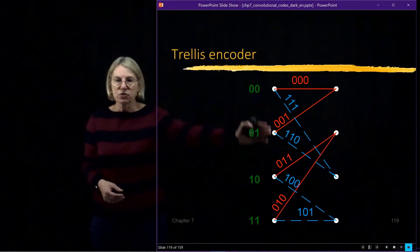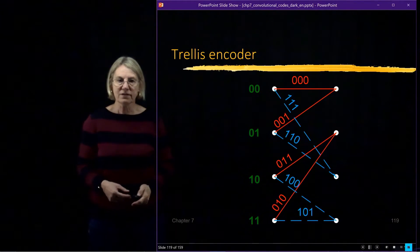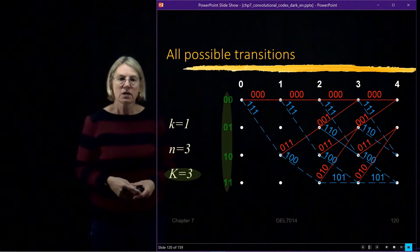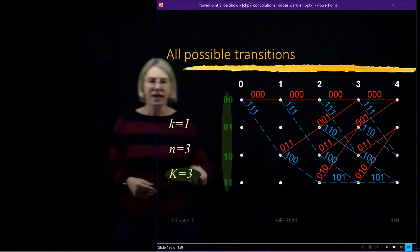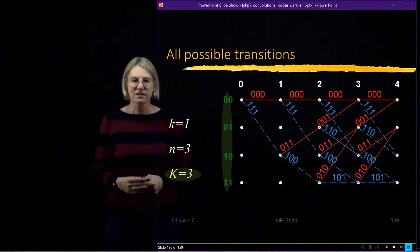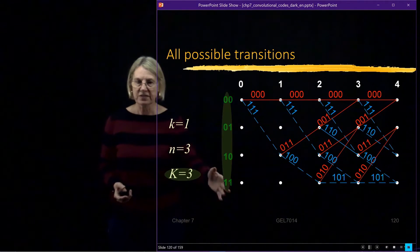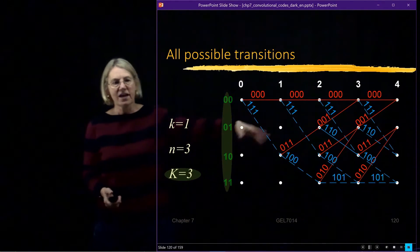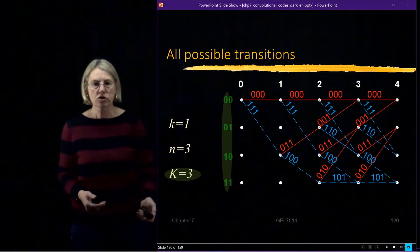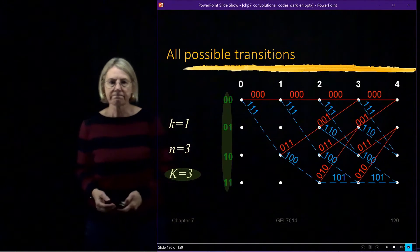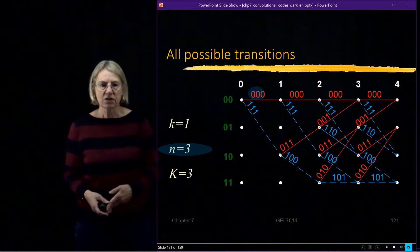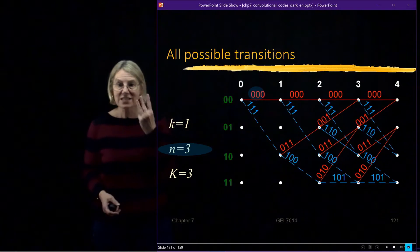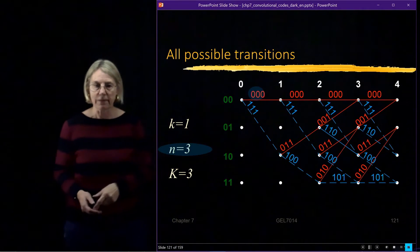So we have our basic trellis for the encoder. And if we build a complete trellis, we would just repeat this over and over. So here we have the repeated trellis. And of course, we have our states. The constraint length is 3, which means we have 4 states. And then all the transitions are defined. And we have our code words at the output. So if I wanted to notice that n equals 3, that's because when I look at what are the code words, I have three bits in the code words. So that's directly from n equals 3.